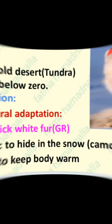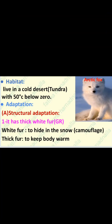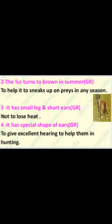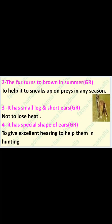Let's move on to another animal: the Arctic fox. The Arctic fox lives in a cold desert called tundra, with temperatures 50 degrees below zero. The structural adaptation of the Arctic fox: one, it has thick white fur — white fur to blend in with the snow or use camouflage, and thick fur to keep its body warm. Two, the fur of the Arctic fox turns brown in the summer to help it sneak up on prey in any season.